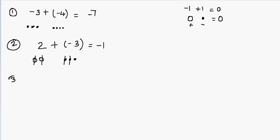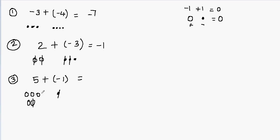After canceling, I'm only left with one negative counter, so my answer will be negative 1. Now let's take a look at another example: 5 plus negative 1. I have five positive counters and one negative counter. Positive and negative cancel out each other, so that one negative cancels with one positive counter, and I'm left with 4 positive counters. My final answer will be 4.